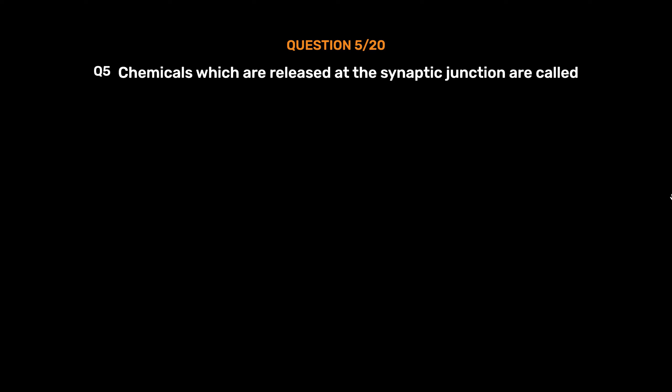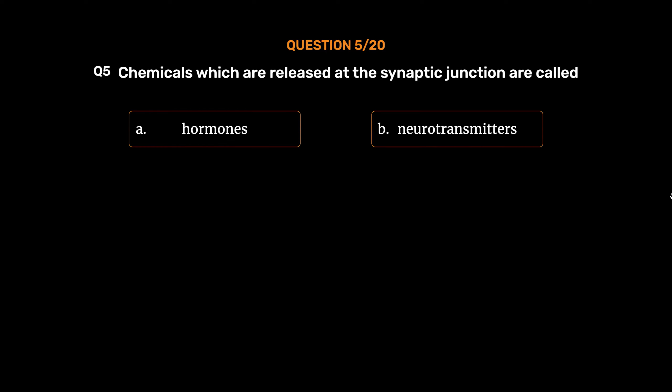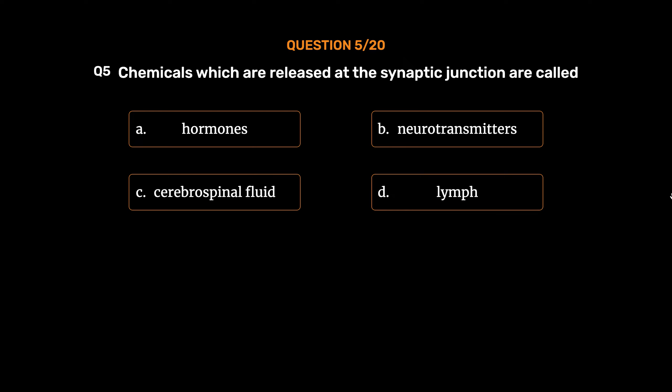Question number 5. Chemicals which are released at the synaptic junction are called: Option A: Hormones. Option B: Neurotransmitters. Option C: Cerebrospinal fluid. Option D: Lymph. The correct answer is Option B: Neurotransmitters.